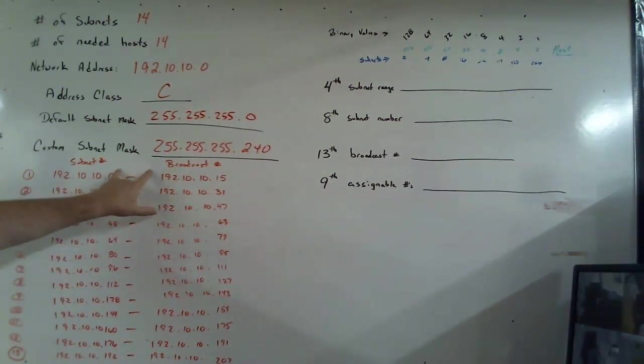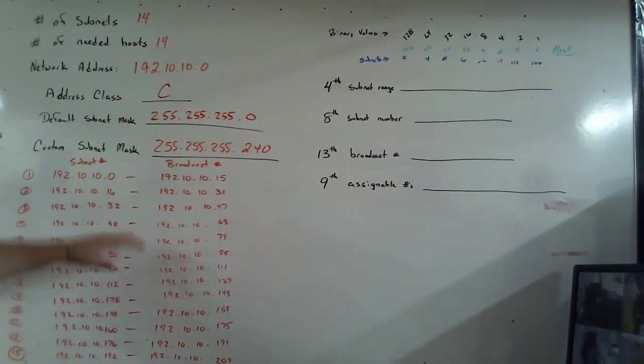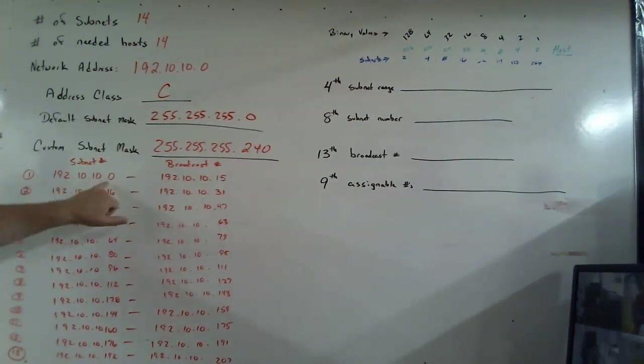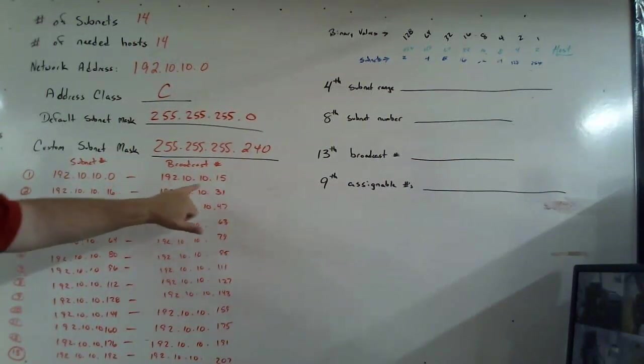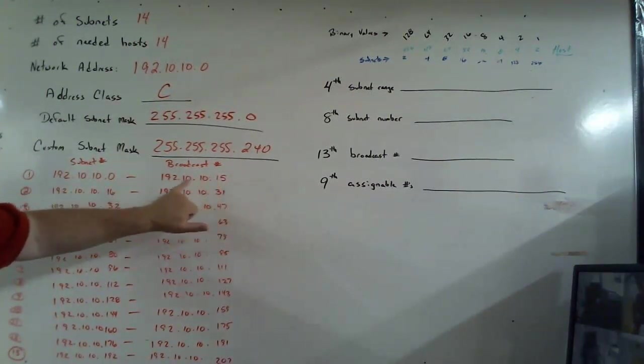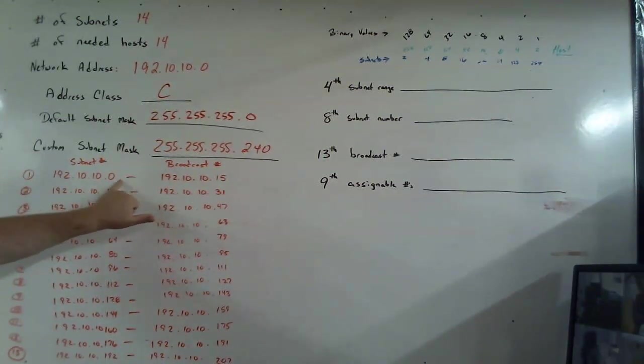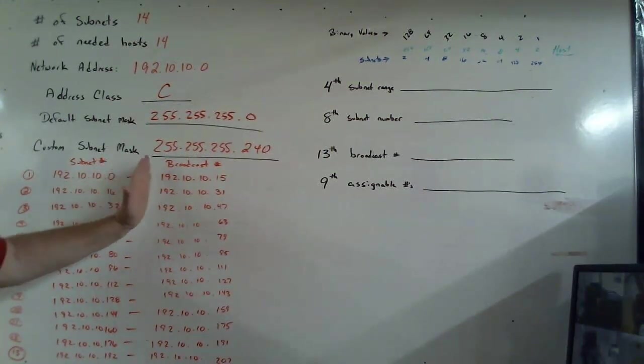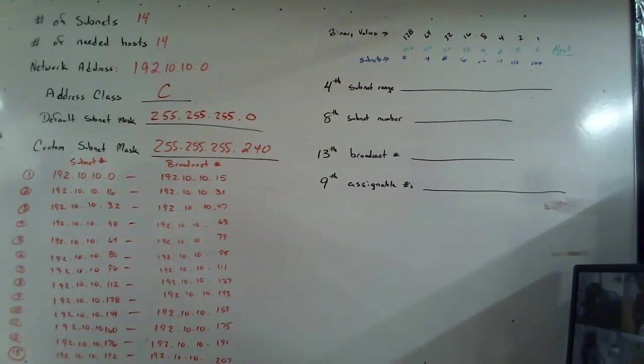When a machine receives and understands that's the broadcast number, it listens to that message, even though the number is not the same as itself. But it realizes it's a broadcast. So therefore, this one also I cannot use on an individual machine. This is why we have assignables, or the usables, meaning what is in between. So on this first range, for instance, I can't use the zero, but the first number I can use is the dot one. I can use the two, the three, the four, all the way up. I can't use the 15, but I can use the 14. So in this case, the usables would be dot one through dot 14. So you're basically adding one to the left and subtracting one from the right. So let's go ahead and answer our questions.